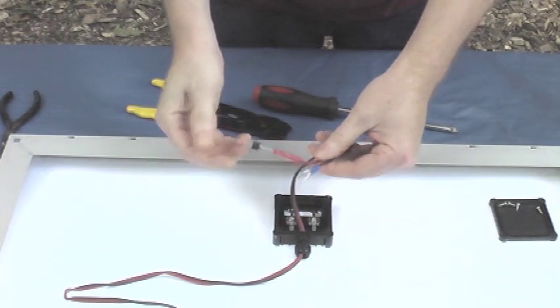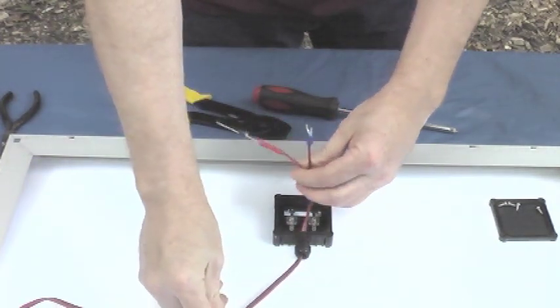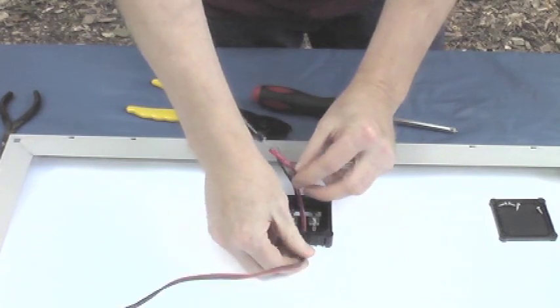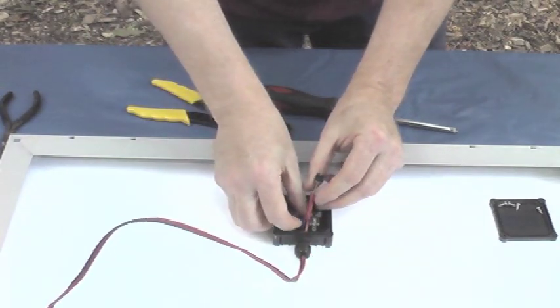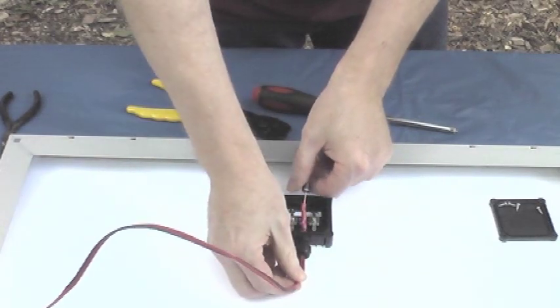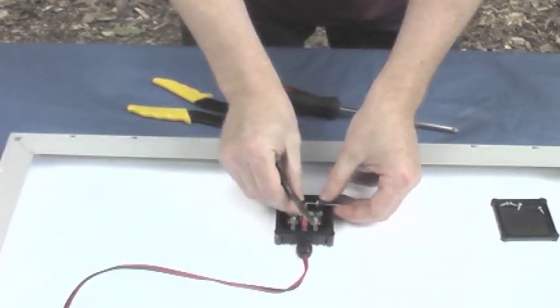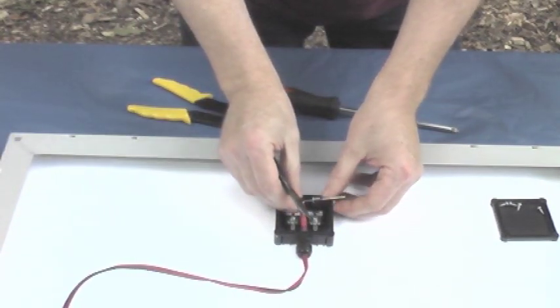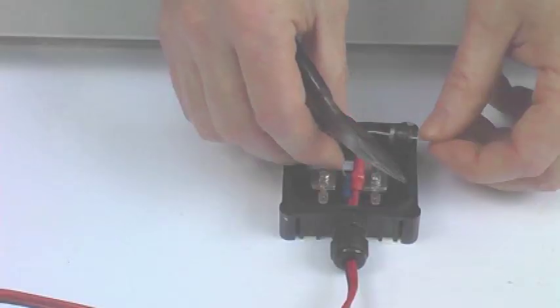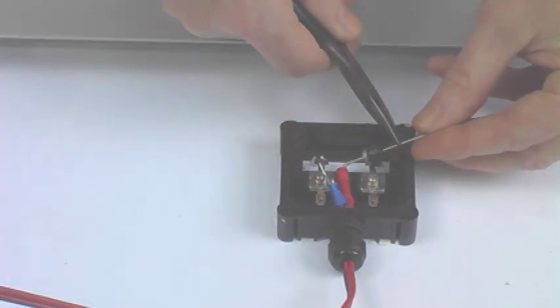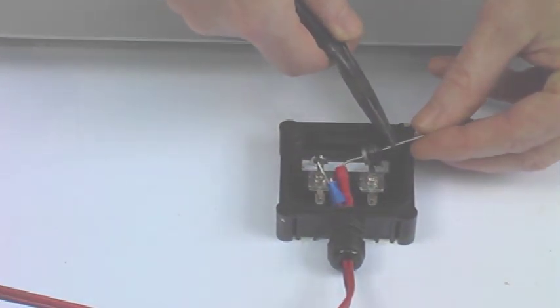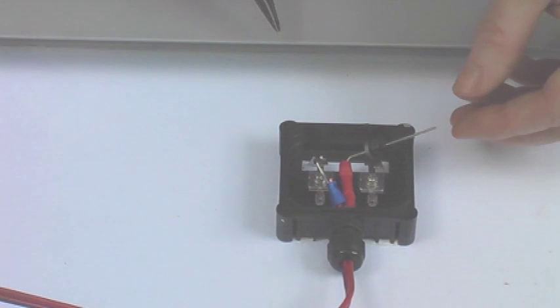Now the next thing we're going to do is we're going to bend that diode so we can make it fit into the box. Now we've bent the diode at a right angle. We've bent the diode at a right angle and now we're going to bend another right angle so we can get this into the fixture.